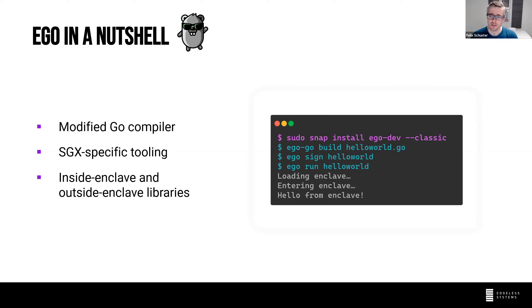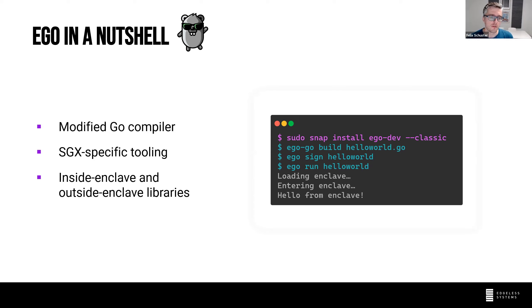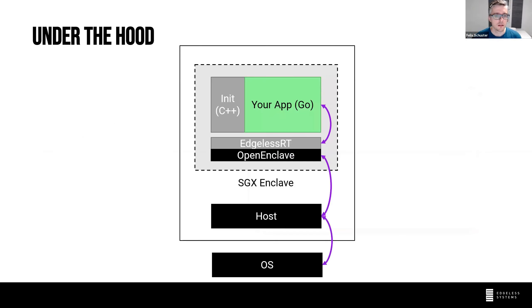EGo consists of three components. The first is a modified Go compiler — inside Intel SGX enclaves you cannot issue system calls or talk to the operating system directly, but Go normally puts raw syscall instructions into its code. We needed to modify the Go compiler to prevent that. We also have some SGX-specific tooling and libraries that make it easy to derive sealing keys and perform remote attestation.